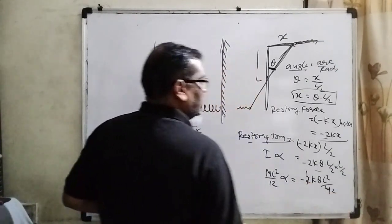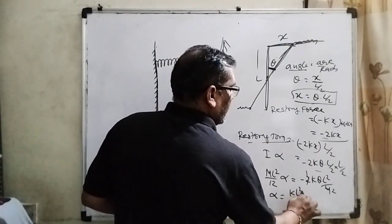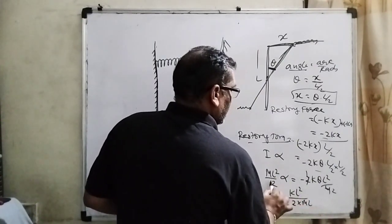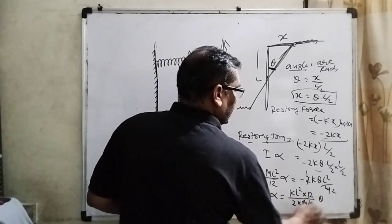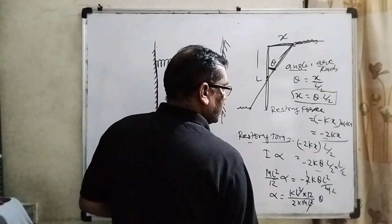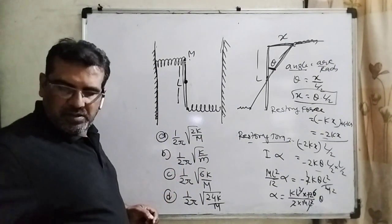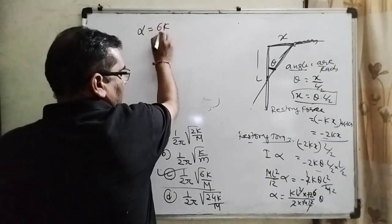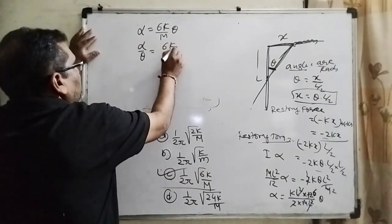Simplifying — the L² terms cancel, and 12 moves to the numerator. We get alpha = −(6K/M) × theta. Therefore, alpha/theta equals 6K/M.